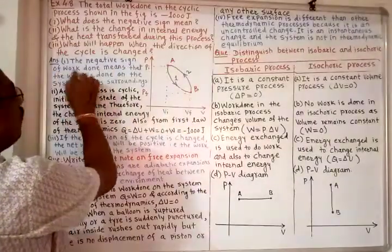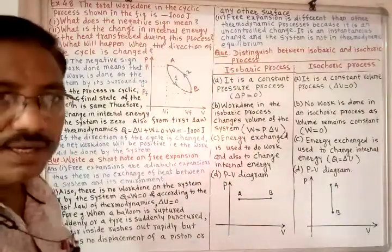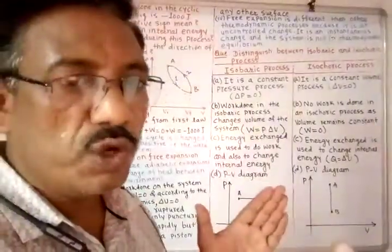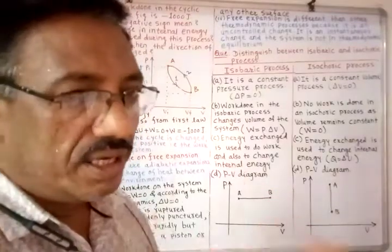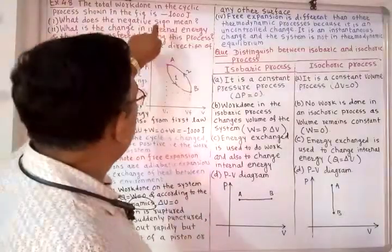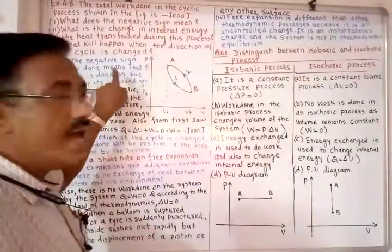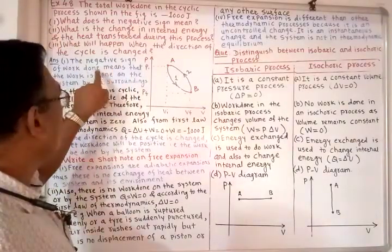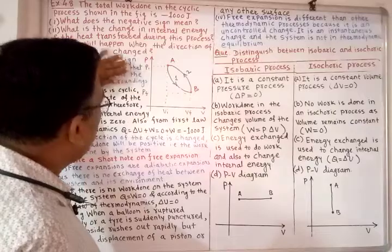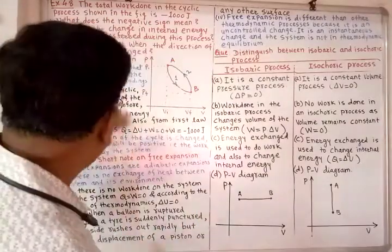First question answer: the negative sign means that work is done on the system by the surrounding. When a piston moves outward, work is done by the system on the surrounding, which is positive work done. But here the work done is negative, so the negative sign indicates that work is done on the system by the surrounding.